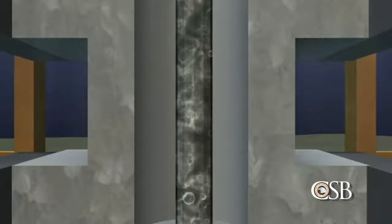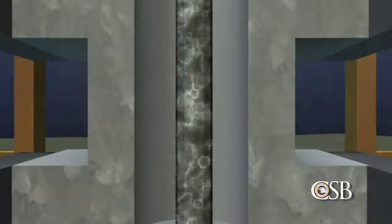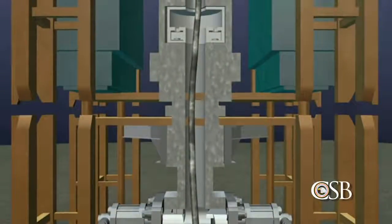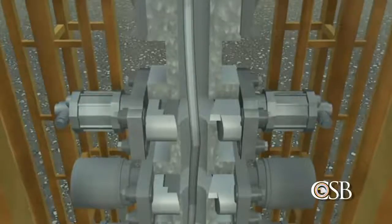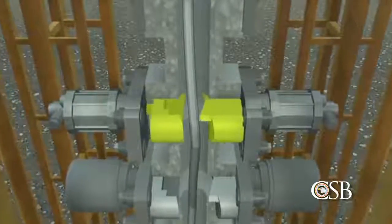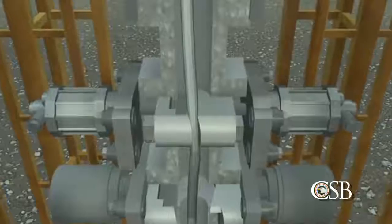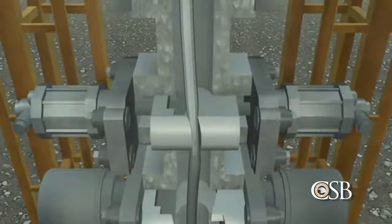After extensive analysis, the CSB concluded that this large difference in pressure likely caused the drill pipe to buckle, essentially bending the pipe off-center inside the blowout preventer. The buckling pushed sections of the drill pipe outside of the reach of the blind shear ram blades. This would eventually prove to be catastrophic.